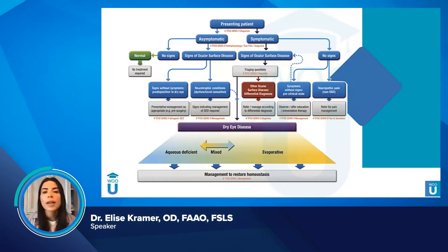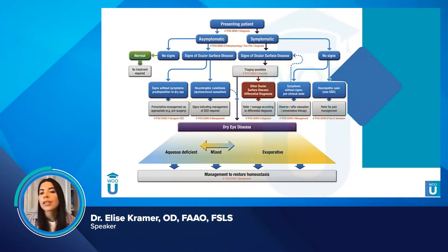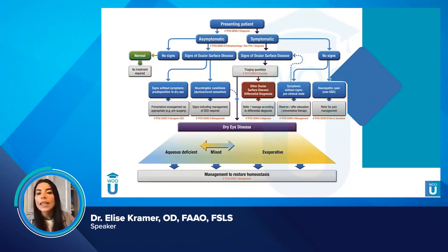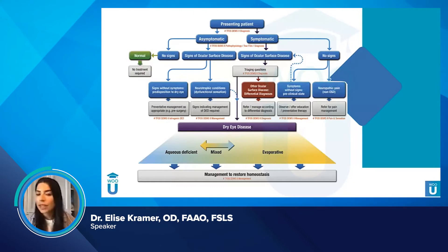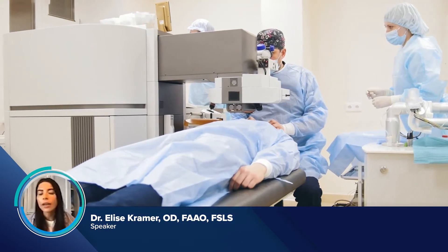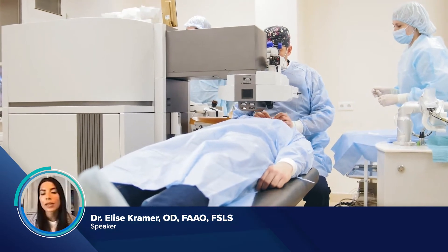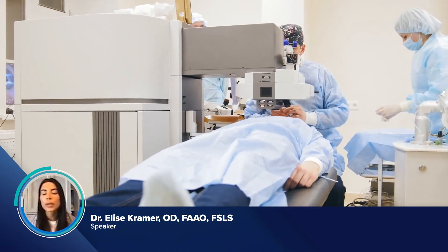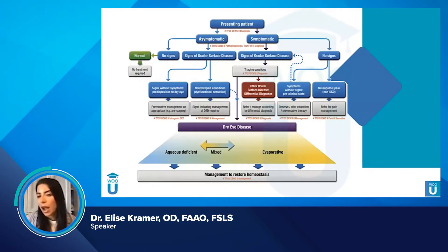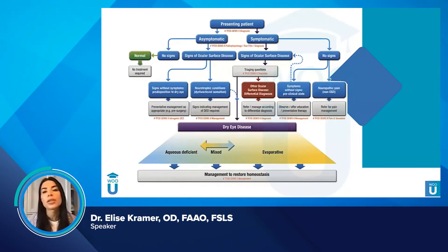If a patient is symptomatic but has no signs, it could be that the signs are just not there yet — a pre-clinical state. These patients need to be treated because they're symptomatic. For example, if they ever get cataract surgery, they might develop signs, so those patients really need to be treated, especially if they're having symptoms.